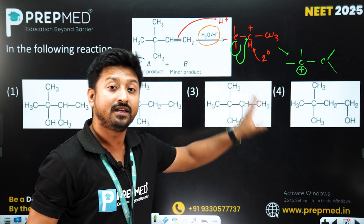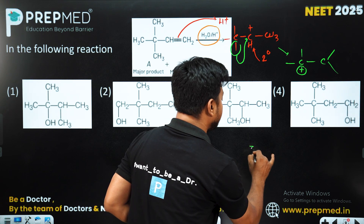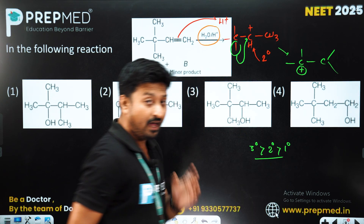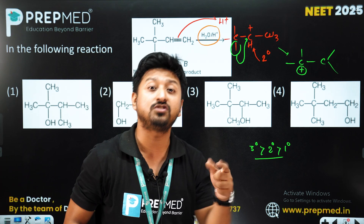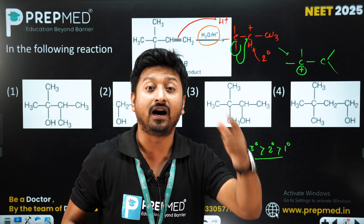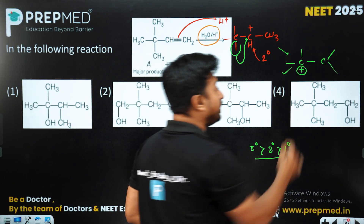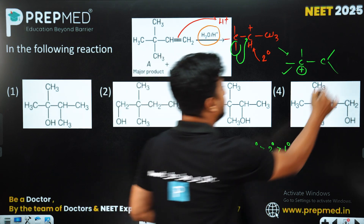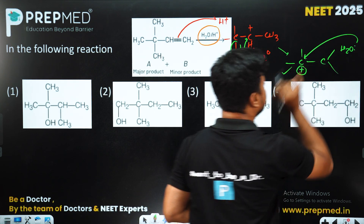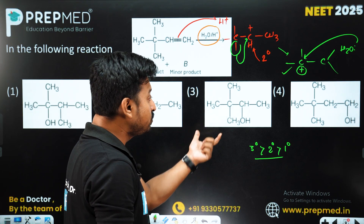We know that the stability of carbocations is: tertiary greater than secondary greater than primary. We also know that the more stable the intermediate, the more favorable the product formed via it. So the tertiary carbocation, which is the stable intermediate here, is where water will attack at that carbocation position, leading to the formation of the OH group.